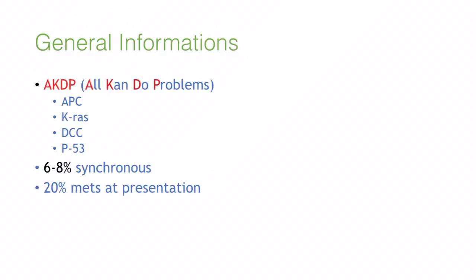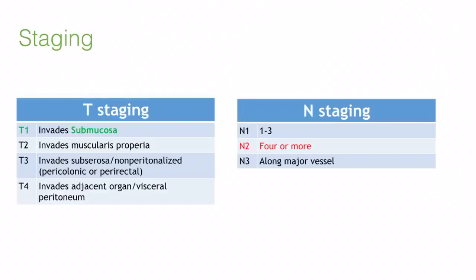Six to eight percent of colon cancers are synchronous. This is a common practical question: if you perform a sigmoidoscopy and find a risky polyp or carcinoma, the next step is colonoscopy — because of the six to eight percent chance of a synchronous lesion. Also, twenty percent have metastases at presentation.